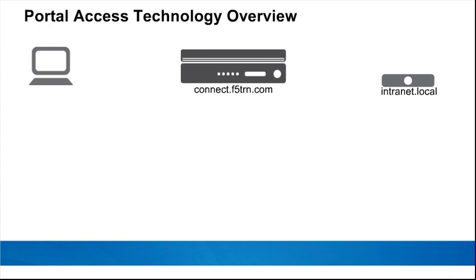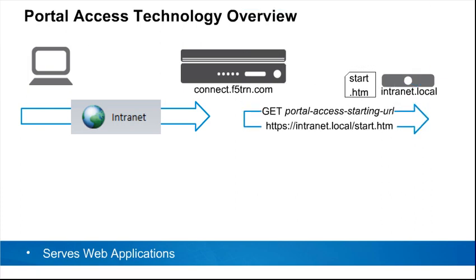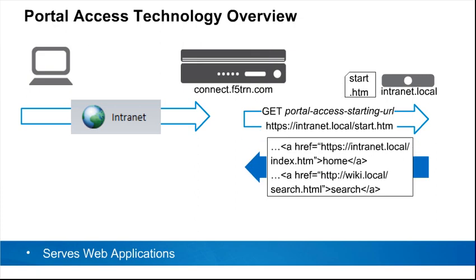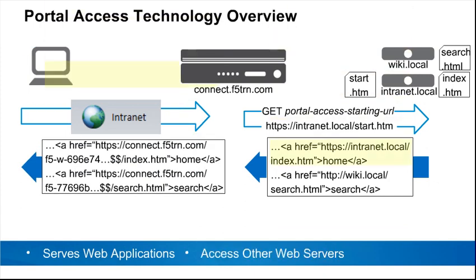Before we jump into the configuration, let's take a closer look at the technology. In this scenario, there are web applications inside the company that are protected by a firewall that is not shown. For varying reasons, an SSL VPN is not always the preferred solution. APM can provide portal access to internal web applications for remote users. The user logs on to APM and clicks a portal access resource on the APM landing page. The BigIP is configured with the starting URL for that resource and sends the request to the internal server — in this case to intranet.local.start.htm. The server responds to APM with a web page that contains HTML links to another page on that server as well as a page on a different server. The host names in these links are encoded and sent to the client.